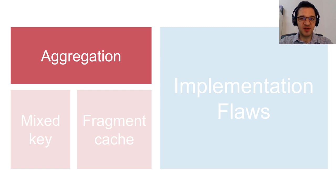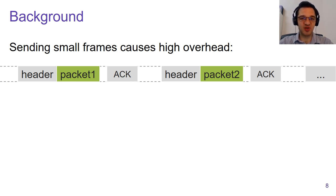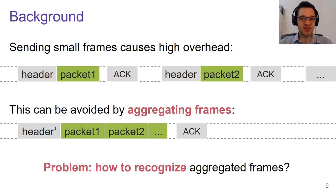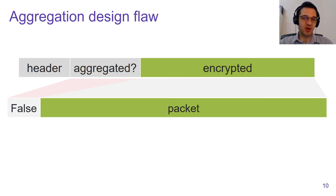The idea is that in Wi-Fi, it's very inefficient to send small packets, because every Wi-Fi frame needs to have its individual header and needs to be individually acknowledged. However, it's much more efficient to aggregate multiple packets into one larger Wi-Fi frame. The question becomes how a receiver can detect whether a Wi-Fi frame contains a single network packet or an aggregation of multiple network packets. The Wi-Fi header contains a flag that indicates whether the encrypted payload contains a single or multiple aggregated network packets.